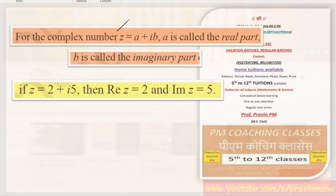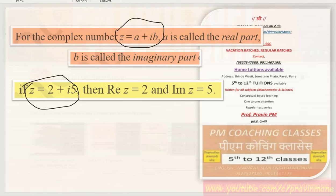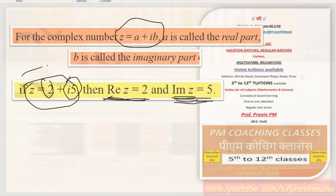For example, for complex number z equal to a plus ib: a is called the real part and b is called the imaginary part, because b is associated with iota. We write Re(z) and Im(z) accordingly. For example, if z equals 2 plus 5i, then Re(z) equals 2 and Im(z) equals 5.